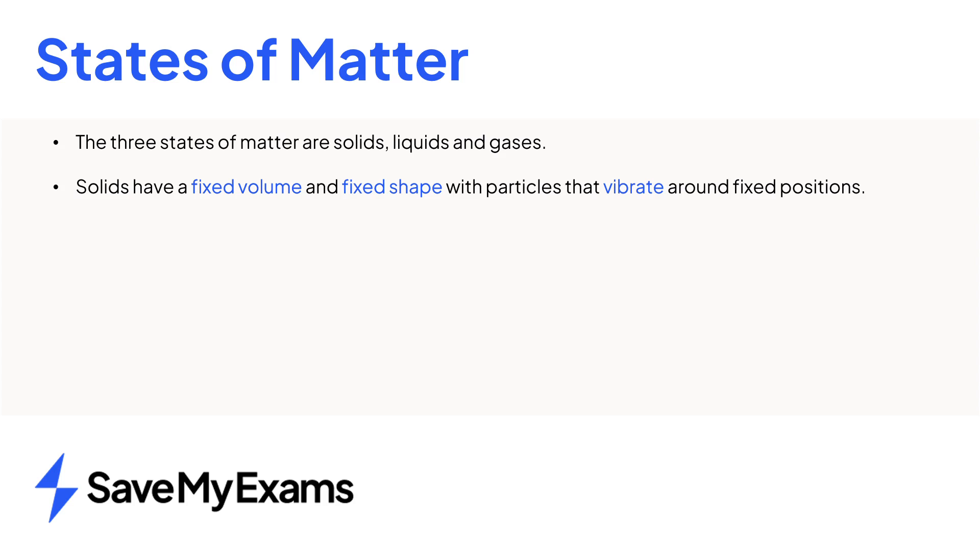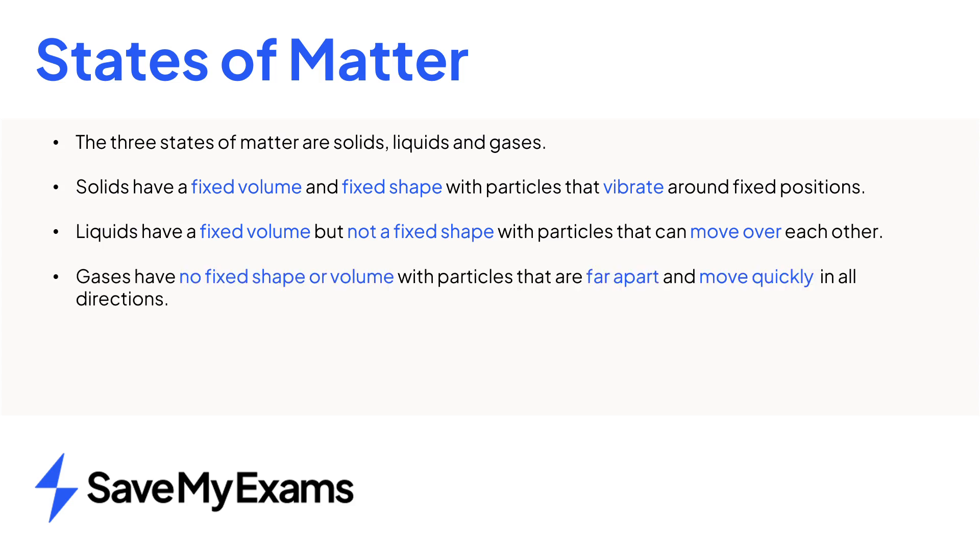The particles in a liquid are able to move over each other which means that liquids have a fixed volume but not a fixed shape. The particles in a gas are far apart and move quickly in all directions meaning that gases have no fixed shape or volume.